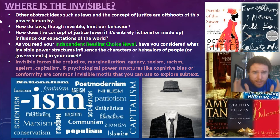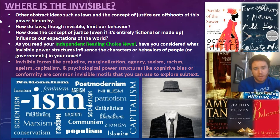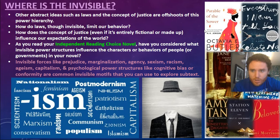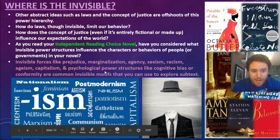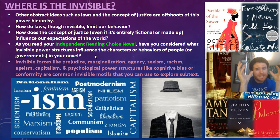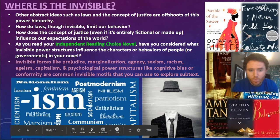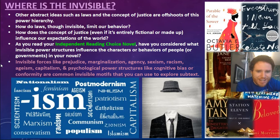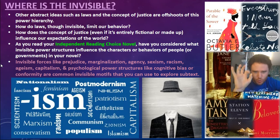As you read your independent reading choice novel, have you considered what invisible power structures influence the characters or the governments in your novel? Some books like Parable of the Sower, Station Eleven, or even Beloved have governments that seem to be disintegrating — whether around a post-apocalyptic event or the Civil War in Beloved. Invisible forces like prejudice, marginalization, agency, sexism, racism, ageism, capitalism, and psychological power structures like cognitive bias and conformity are invisible motifs you can use to explore the subtext.